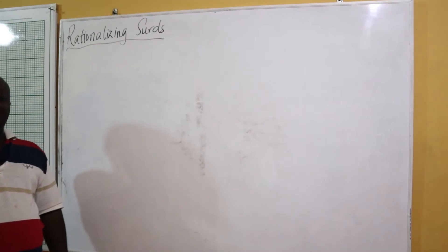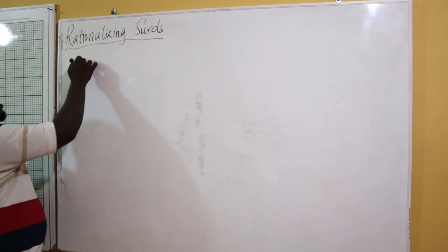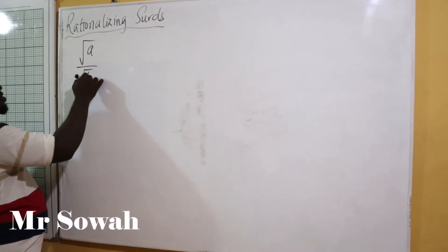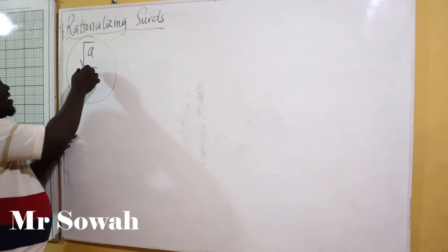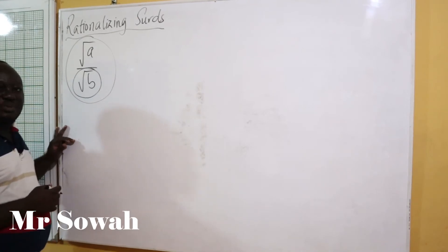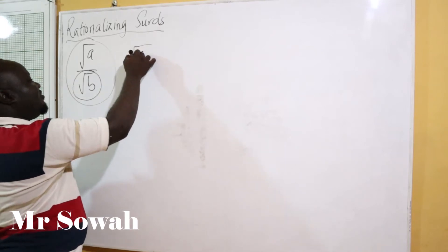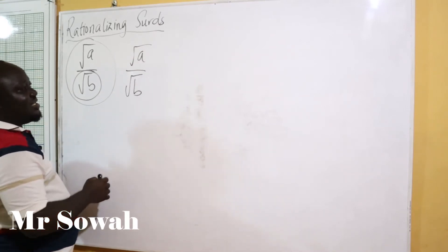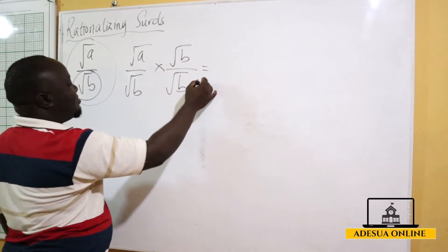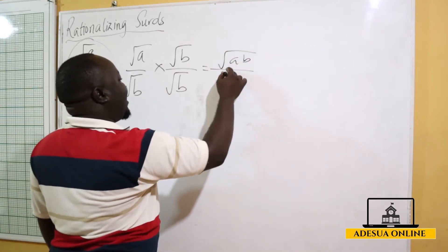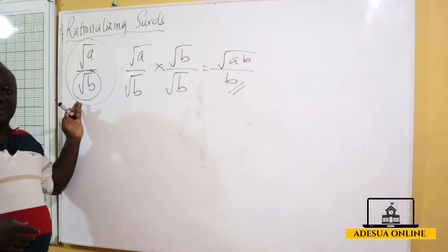The topic is rationalizing surds. If I have square root of a over square root of b, this is considered irrational when the radical sign is at the denominator. To rationalize this, I multiply by square root of b over square root of b. This gives us square root of ab over b, eliminating the radical sign at the denominator.